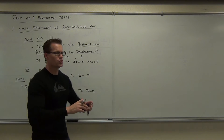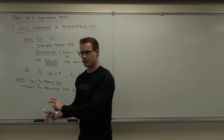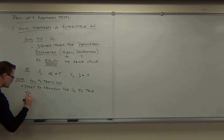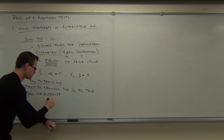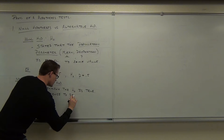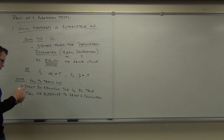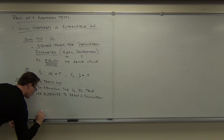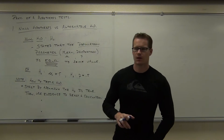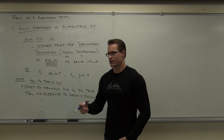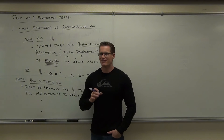You start by assuming the null hypothesis is a true statement. Then, you use evidence to reach one of these conclusions. Evidence, by the way, is given to you by your sample. When you start by assuming that H sub zero is true, that the null hypothesis is true, you're going to be either proving it wrong or not having enough evidence to prove it wrong.